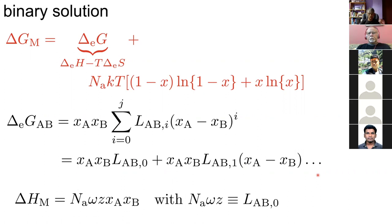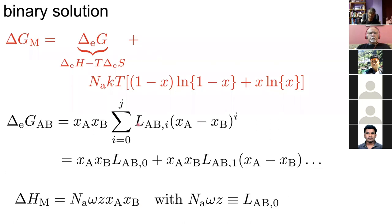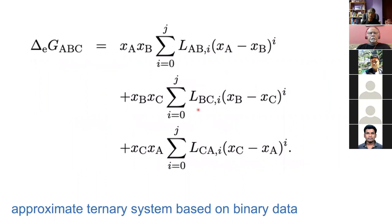This covers the binary solution. For ternary systems, fewer thermodynamic data are available. One approach is to take the three constituent binaries — for a ternary A-B-C, combine the three binary interactions. This part of the equation is no different from the binary formulation, applied to each binary in turn. We combine these three binary terms to represent the excess free energy of the ternary system, and again, if some terms are modified you don't need to modify all the others.